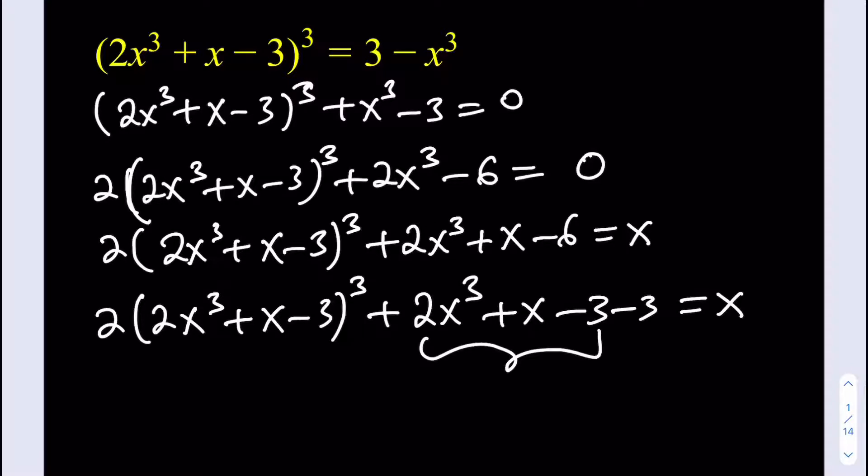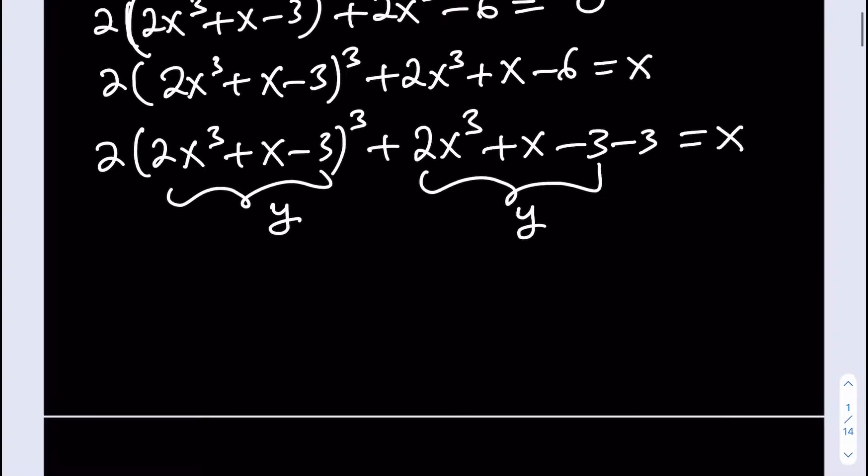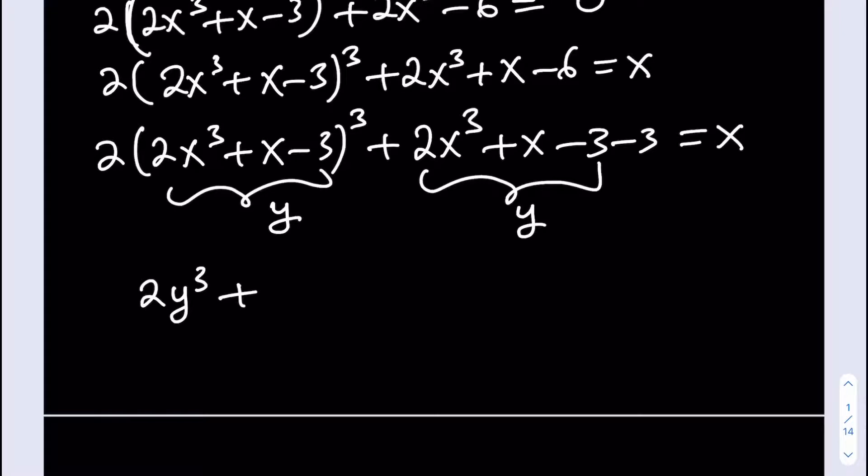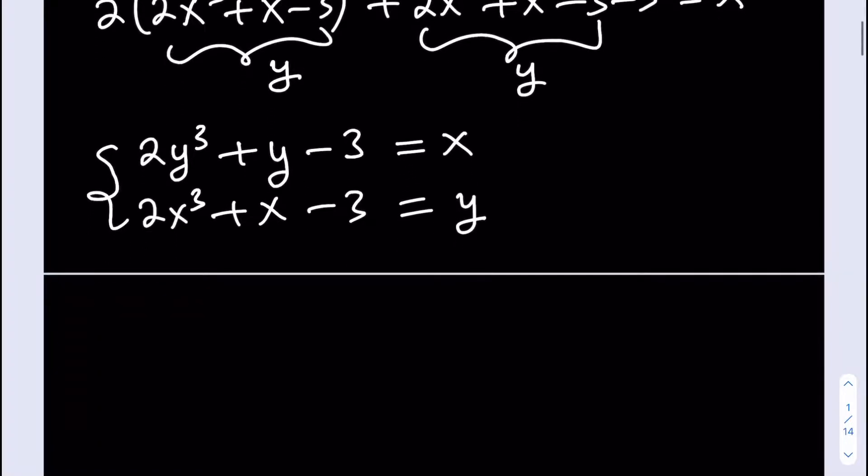This whole thing here is going to be called y. This is also going to be y. Then from here, I'm getting 2y³+y-3=x. This is really cool, because what I called y is 2x³+x-3. So that is equal to y. What I did was, I had one equation which is ninth degree with one variable. I turned that into a system of equations. Sometimes we do that to make the problem actually easier.